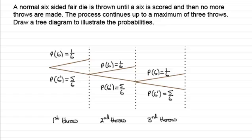I hope that's given you some idea of how to draw tree diagrams and put the probabilities on. In my next tutorial, I'm going to show you how we can work out particular probabilities — like, for instance, the probability of not throwing a six at all in three throws. That brings us to the end for now, and I hope you'll carry on and look at the other tutorials on probability.